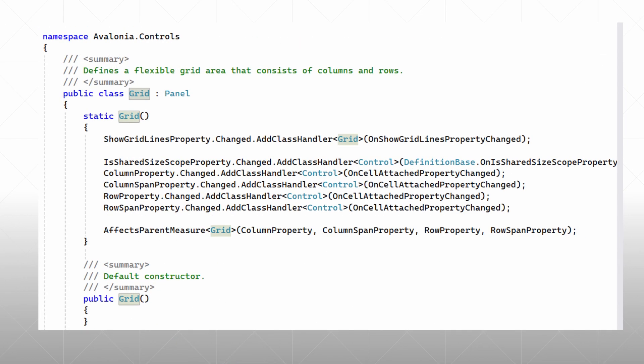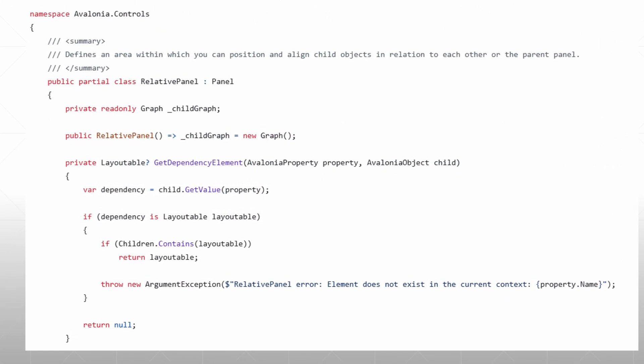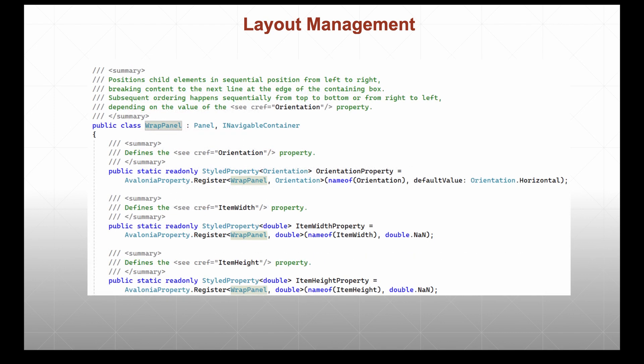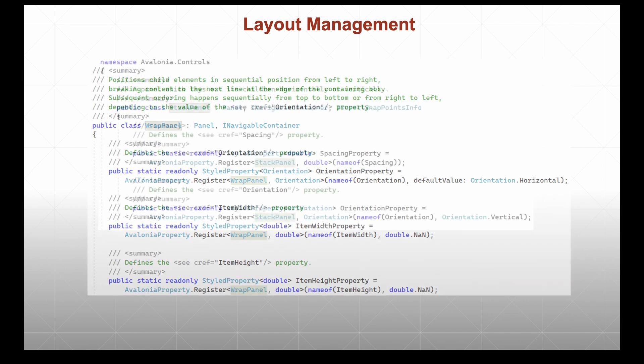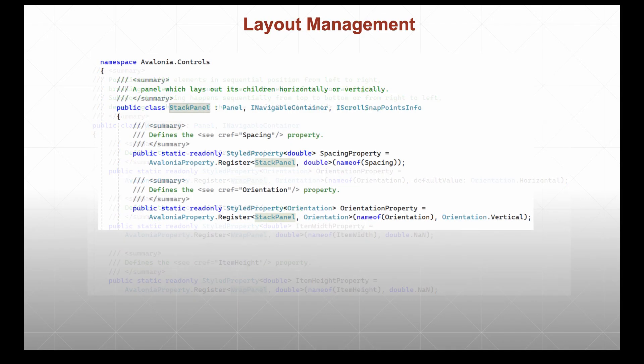A Grid is a panel that defines a flexible grid area consisting of columns and rows. A RelativePanel is a panel where you can position and align child objects relative to each other or the parent panel. A WrapPanel arranges child controls in a sequence, wrapping to the next line or column when the edge is reached. A StackPanel arranges child controls in a single line, either vertically or horizontally. In this video, we will be adding controls using Grid and StackPanels.